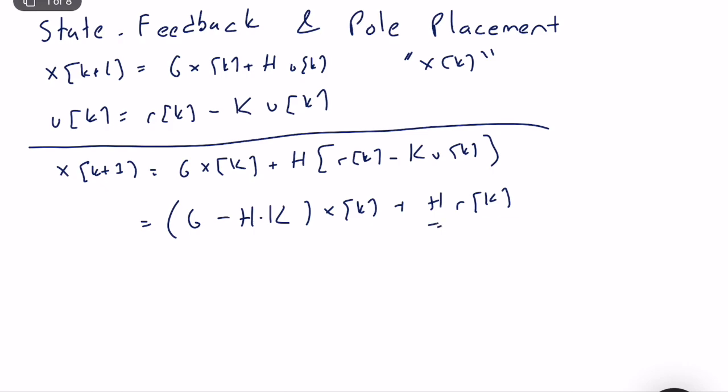As you can see, the input matrix is the same and we have a new reference signal. The key point is we have a new system matrix, or update matrix. G-hat = G − H·K, and K is a controller gain we can technically tune to meet some performance metrics.